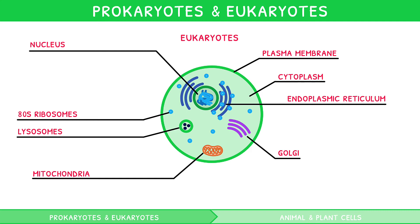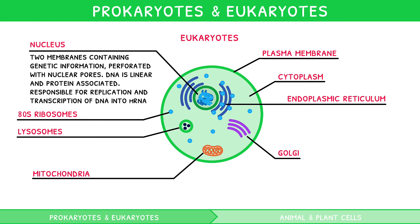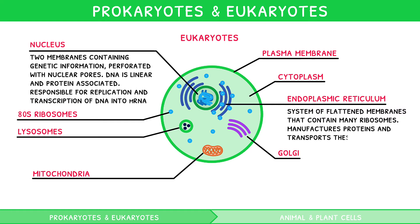Let's take a minute to explore the function of each of these structures. The nucleus is two membranes containing genetic information, perforated with nuclear pores. The DNA here is linear and protein-associated. The nucleus is responsible for replication and transcription of DNA into mRNA. The plasma membrane and cytoplasm are identical in function as in a prokaryote. The endoplasmic reticulum is a system of flattened membrane sacs called cisternae that contain many ribosomes. It manufactures proteins and transports these to the Golgi.